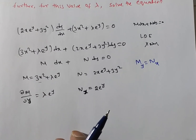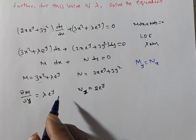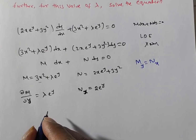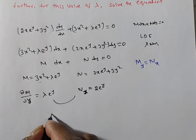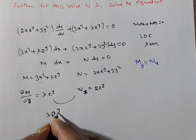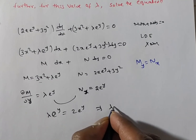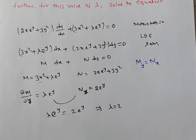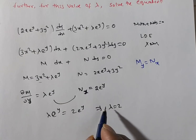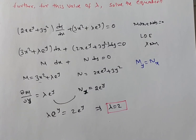Since the equation is exact, these two must be equal: λ·e^y = 2·e^y. From this, lambda = 2. So the first step is completed — we have found the constant lambda value.